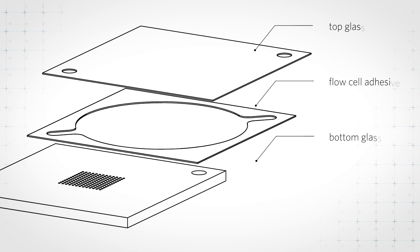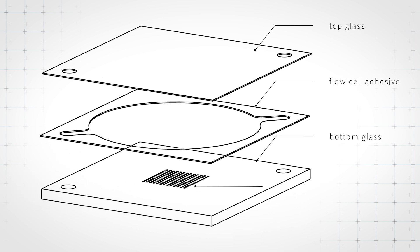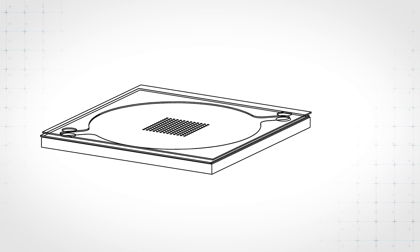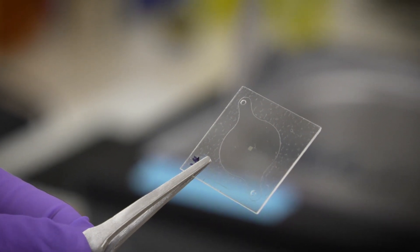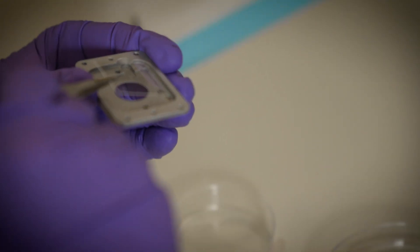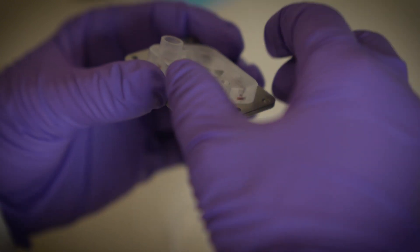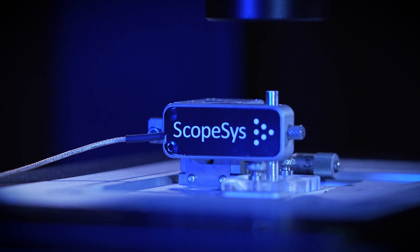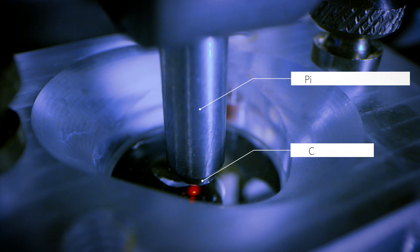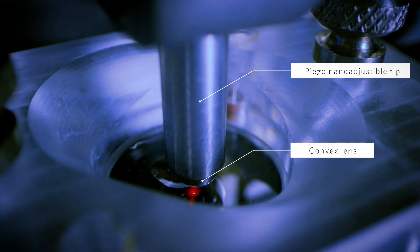For CLIC, you take two pieces of glass and fix them together with a piece of double-sided tape to make a flow cell. On the bottom piece of glass you have an array of micro features — in my case, wells that are three micrometers wide and 500 nanometers deep. You put the sample in between the two pieces of glass and mount it on a microscope, then compress down the sample using a convex lens until the top piece of glass comes into contact with the bottom, trapping the molecules in the wells.